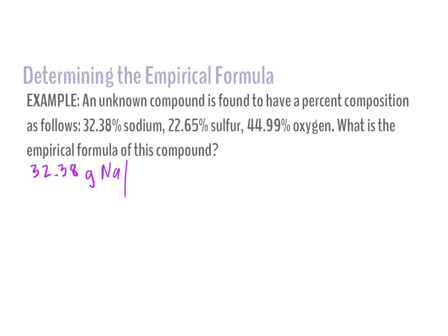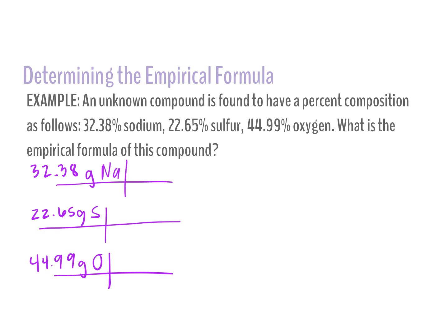My next value is 22.65 grams of sulfur (S), and my final one is 44.99 grams of oxygen. Now I need to convert grams to moles using molar mass from the periodic table. For sodium: 32.38 divided by 23 gives me 1.408 moles of sodium. I'm going to highly encourage you to keep a few decimal places in this step. If we round our moles too soon, the next step could produce funny ratios.